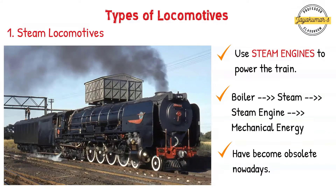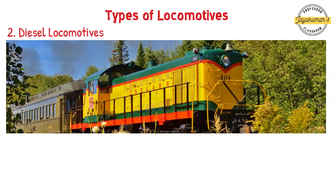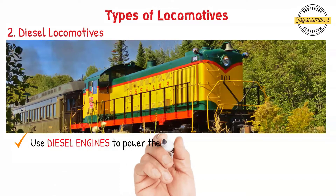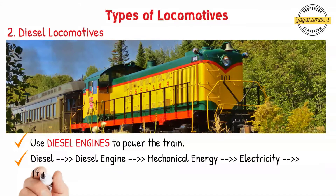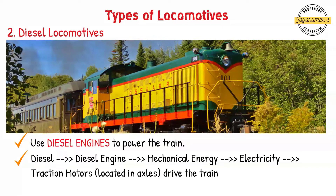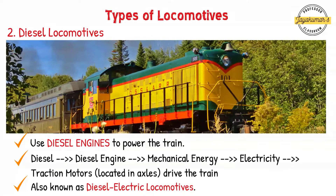For obvious reasons, steam locomotives are not being used these days — they have become obsolete. The second type is diesel locomotives. Diesel locomotives use diesel engines to power the train. Thermal energy of the diesel fuel is converted into mechanical energy using a diesel engine, and this mechanical energy is converted into electricity. The electricity produced powers the traction motors located at the axles, which drive the train. For this reason, diesel locomotives are also known as diesel-electric locomotives.